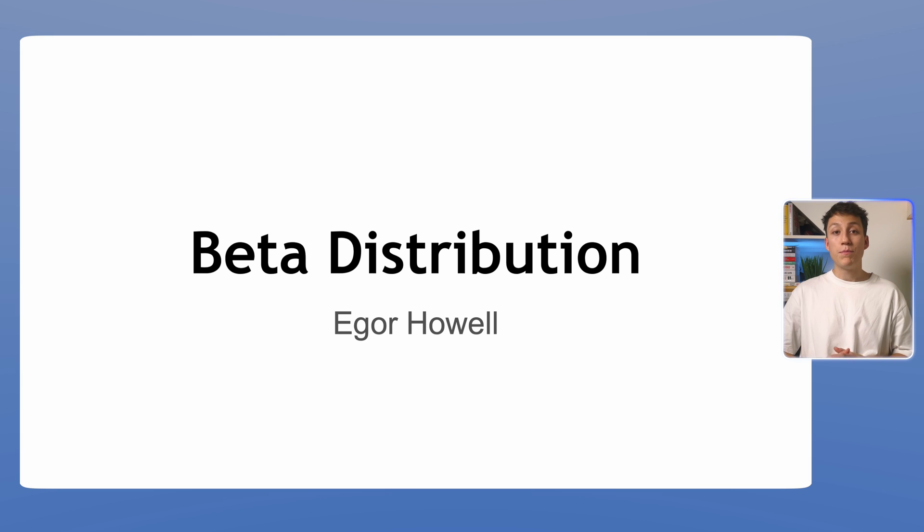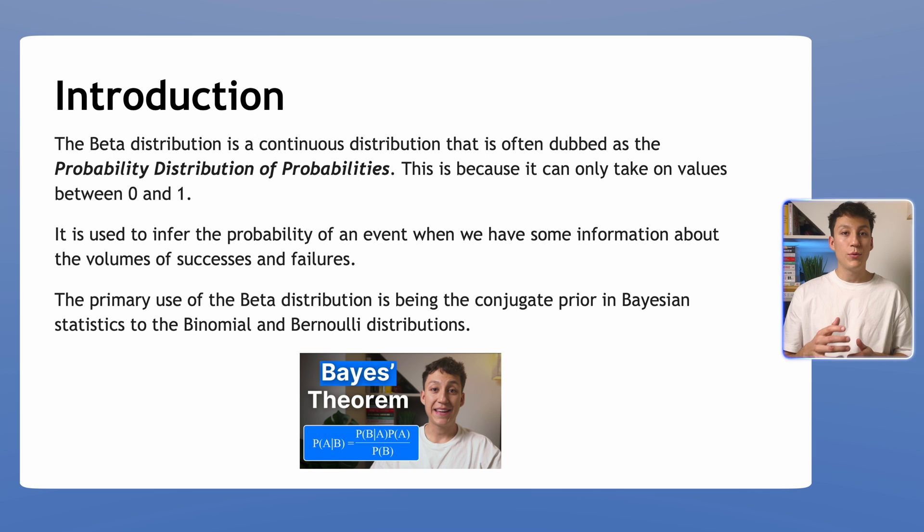In this video we're going to cover the beta distribution which is quite important and actually used quite a lot even though many people probably haven't heard too much about it. The beta distribution is a continuous distribution often dubbed as a probability distribution of probabilities. It's called this because its domain, the values it can take on, are only between 0 and 1. It's often used to infer the probability of an event when we have some information about the number of successes and failures of that event. That may seem arbitrary for now but we'll go over an example to make that theory more concrete in the next slides.